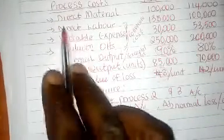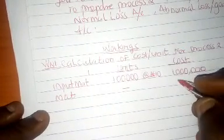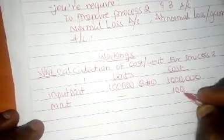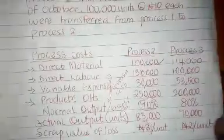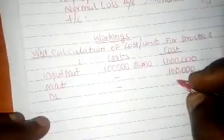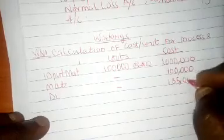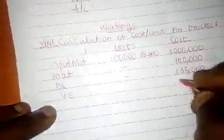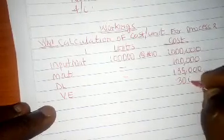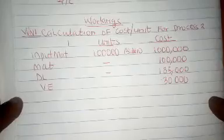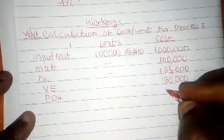We are also told the other materials — that is material: 100,000 Naira. Then we have direct labor: 135,000 Naira. The variable expenses: 30,000 Naira. Then we also have production overheads: 250,000 Naira.